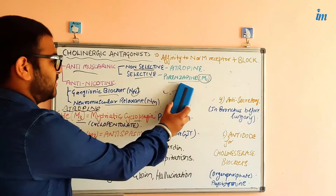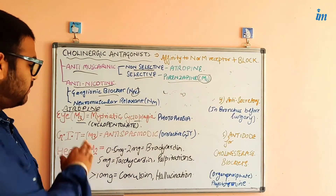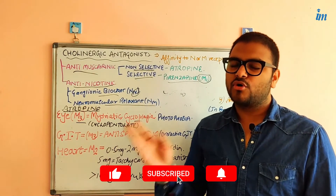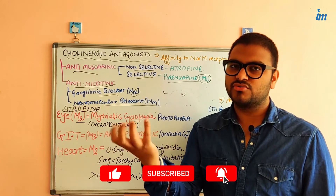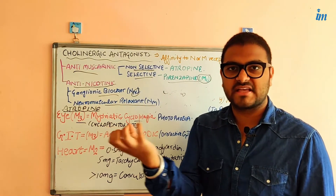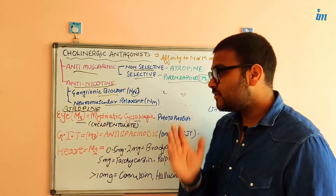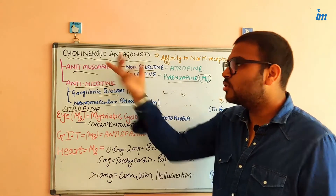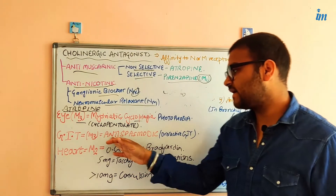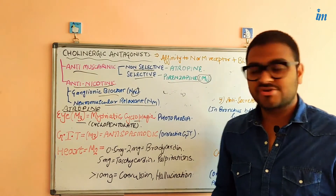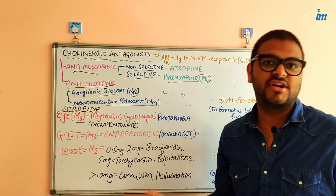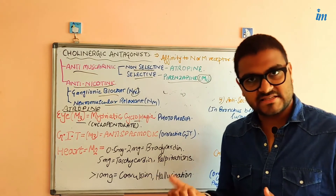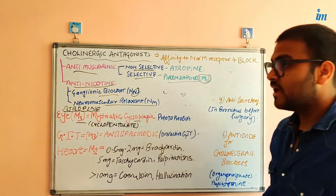Now, the action of atropine on the GI tract: it binds to M3 receptors in the GI tract. Normal cholinergic stimulation of the GI tract produces spasm, high peristaltic movement, and diarrhea-like situations. So atropine acts as an antispasmodic agent, blocking acetylcholine's action on M3 receptors. Therapeutically, it can manage overactive GI conditions, diarrhea, and GI spasms.